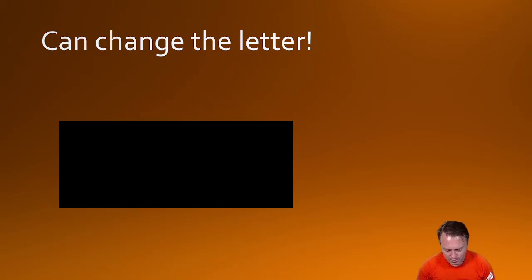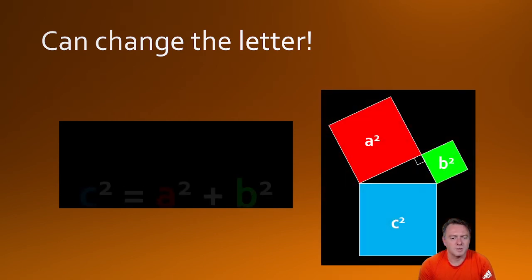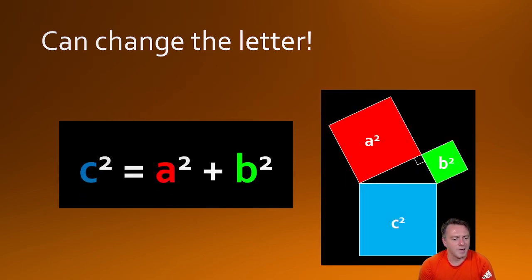Another thing that you might see depending on the school system that you're in, they have different ways of writing Pythagoras' theorem. So sometimes you might see it like this. Instead of h, they say c squared is equal to a squared plus b squared. Now, personally, I don't like it because it's just a random letter.